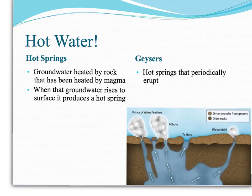Hot springs are groundwater that's been heated by rock that has also been heated by magma. When that groundwater rises to the surface, it produces a hot spring. And a geyser is just a hot spring that will erupt.